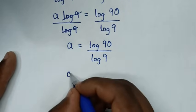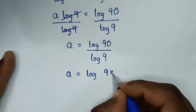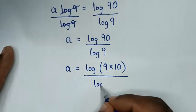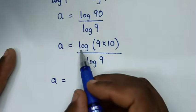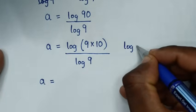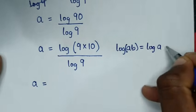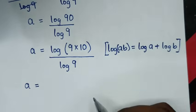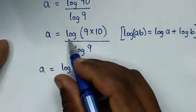Then in the next step, a is equal to log of 90 over log of 9. Now 90 is the same as 9 times 10, so it becomes log of (9 times 10) over log of 9. This part is in the form log(9 × 10), which equals log of 9 plus log of 10.